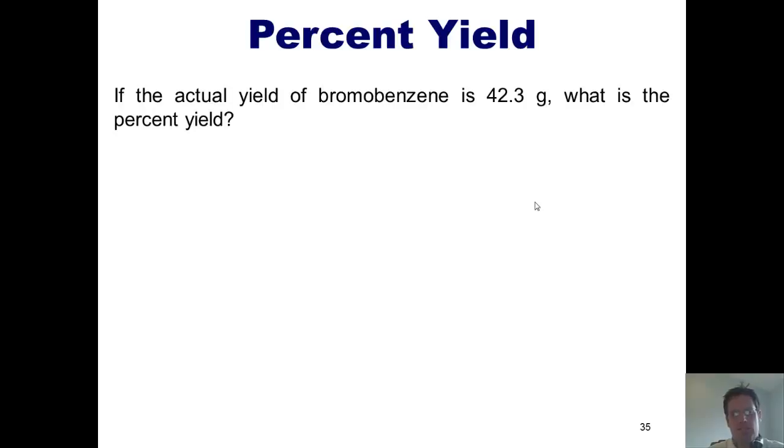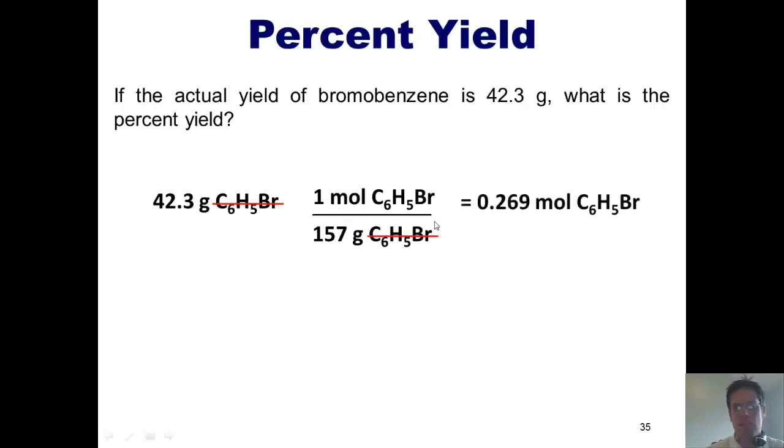Now, to the final question. If the actual yield of bromobenzene is 42.3 grams, what's the percent yield? How do I determine that? Convert everything to moles. 42.3 grams of bromobenzene, using the formula weight of bromobenzene as being 157 grams per mole, is the same thing as 0.269 moles of bromobenzene.